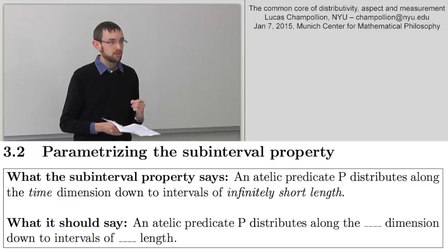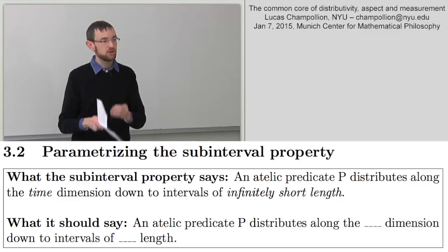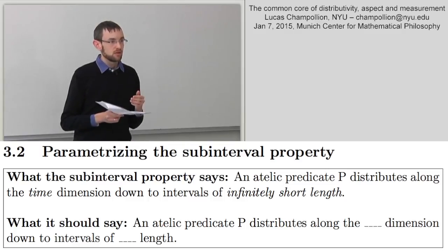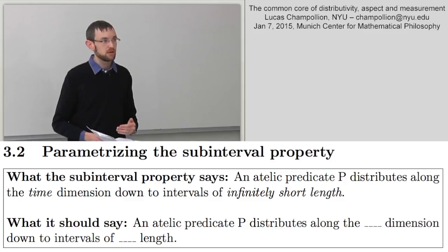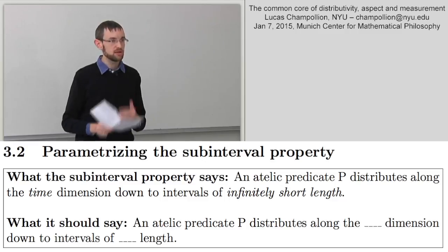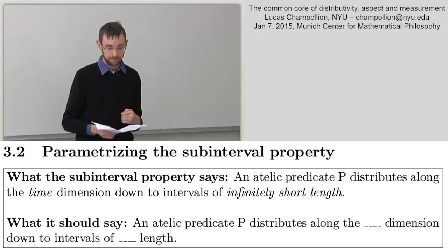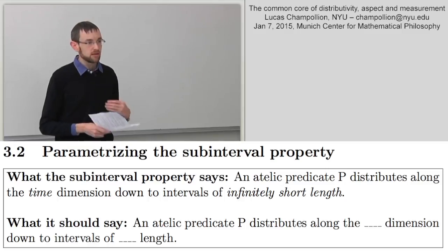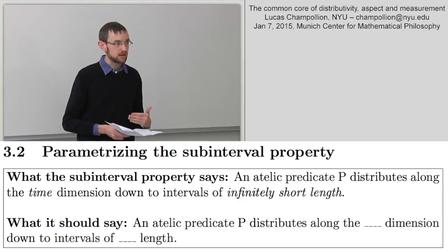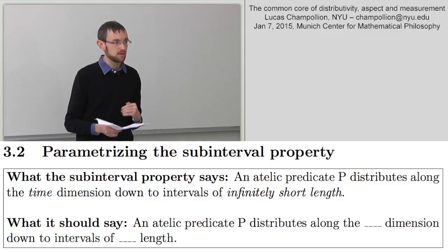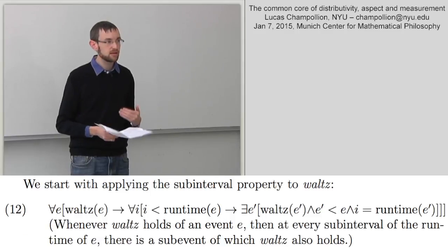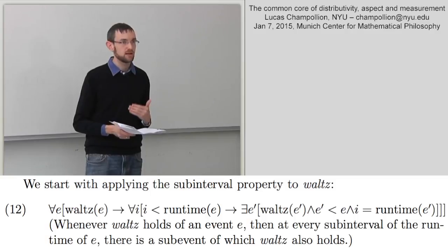So we started with the sub-interval property, which goes all the way down and is hardwired for time. We saw that we need to prevent it from going all the way down, and that sometimes it should go down to spatial sub-intervals and sometimes to temporal sub-intervals. This is what stratified reference will do for us. Let me make a few changes to the sub-interval property to eventually arrive at the definition of stratified reference.